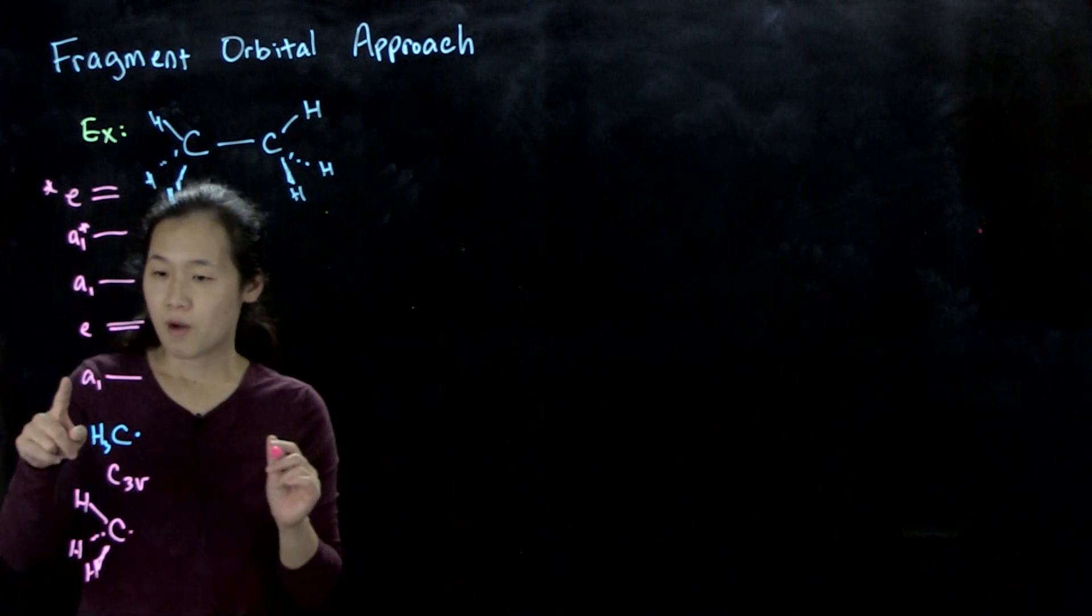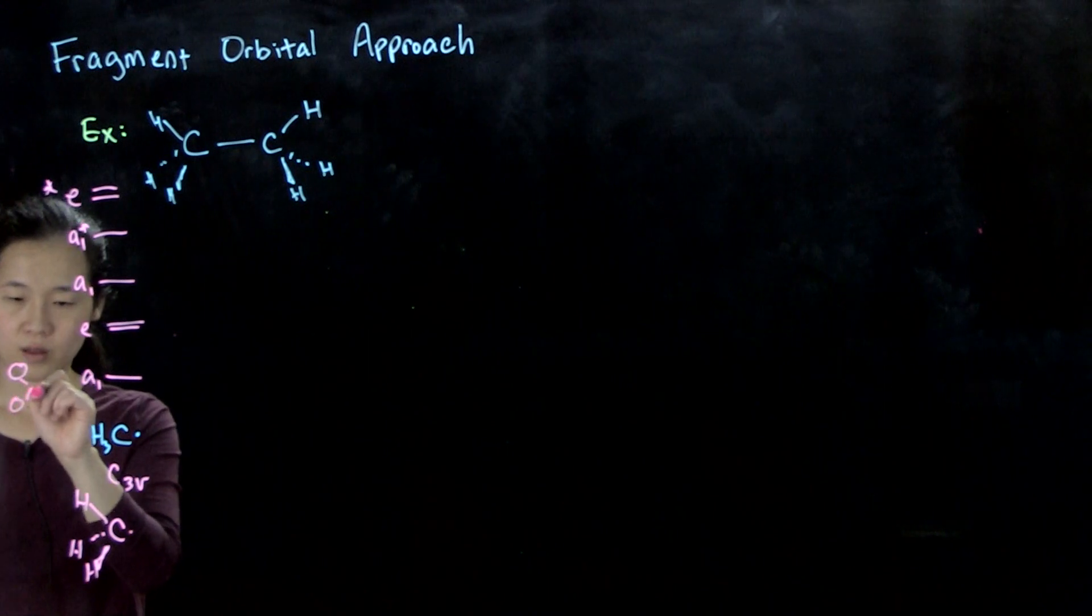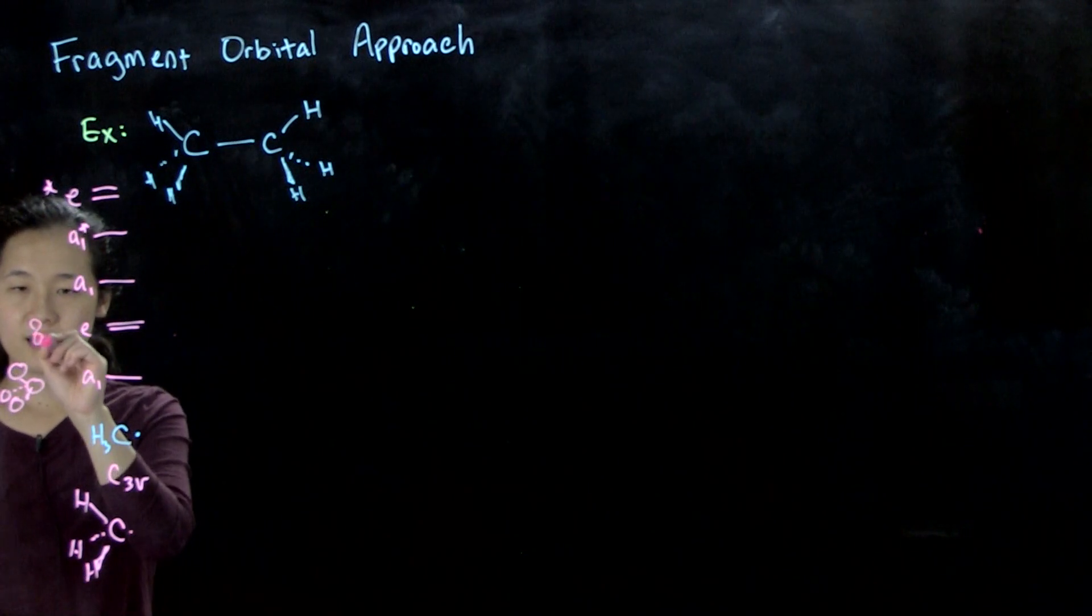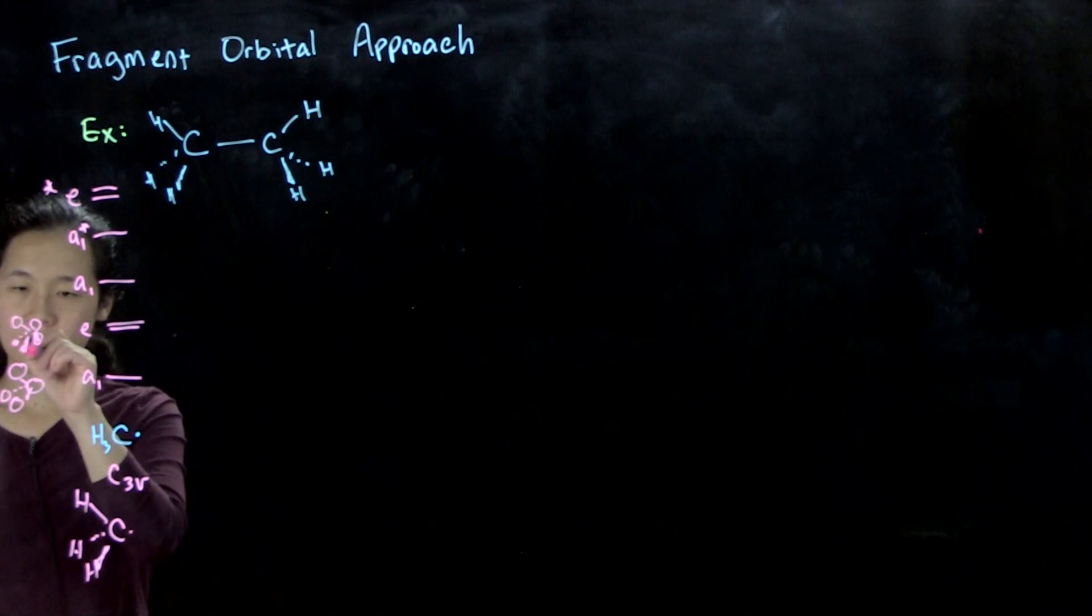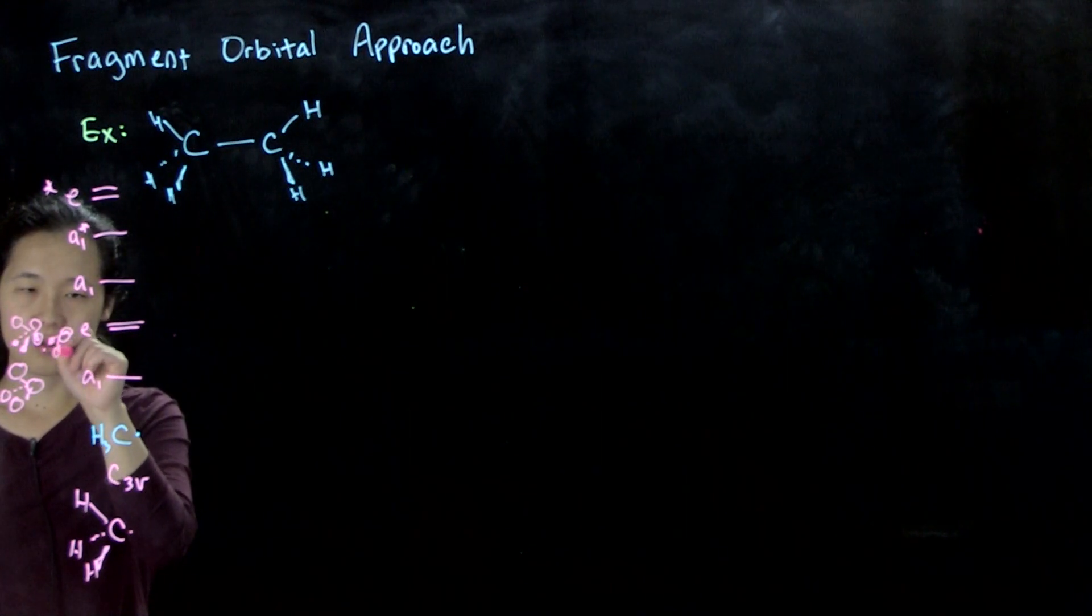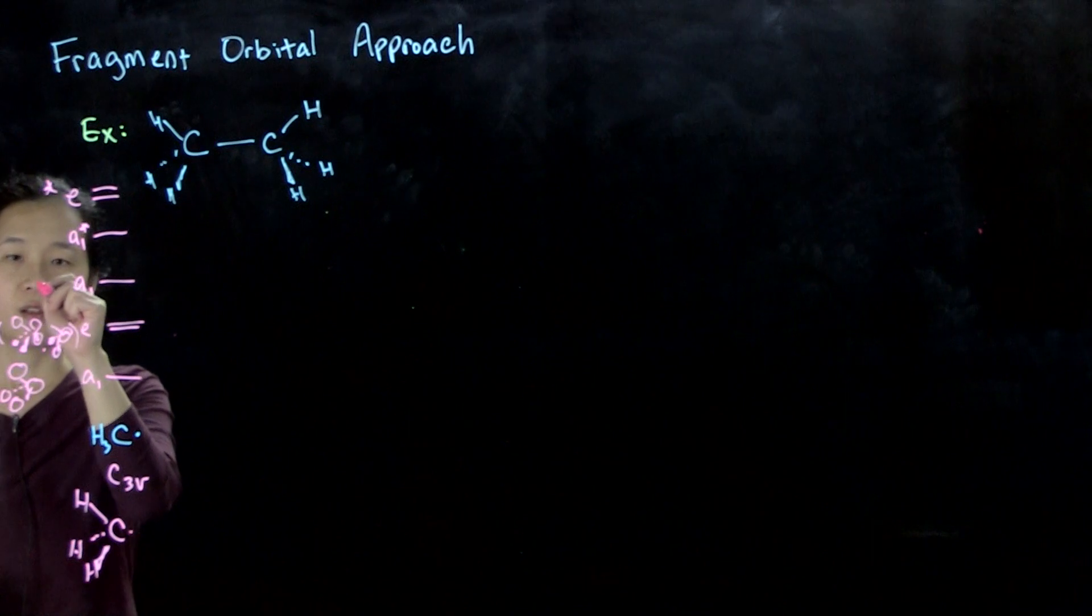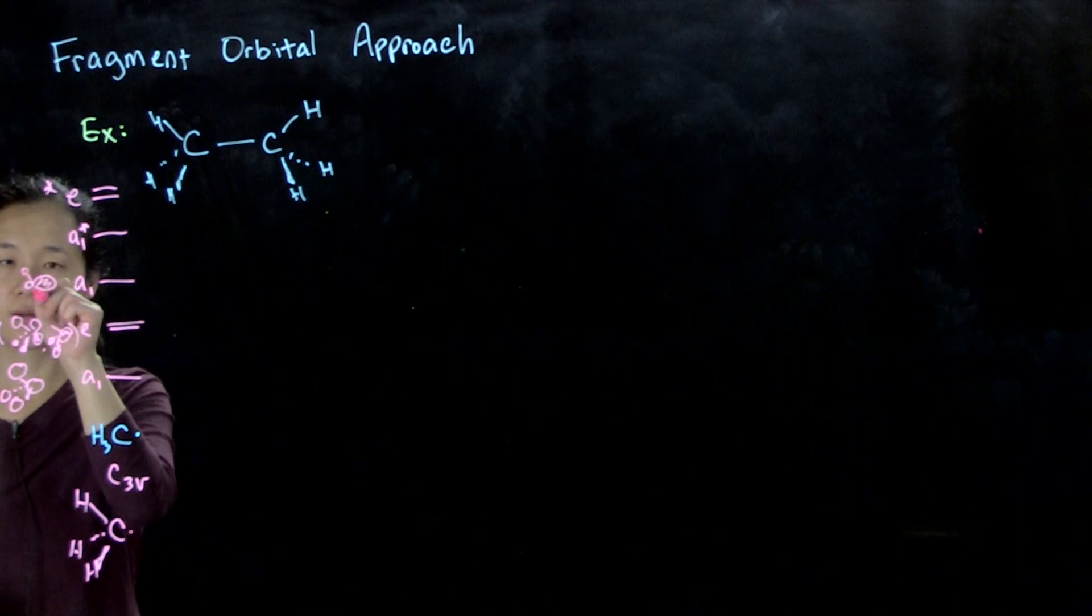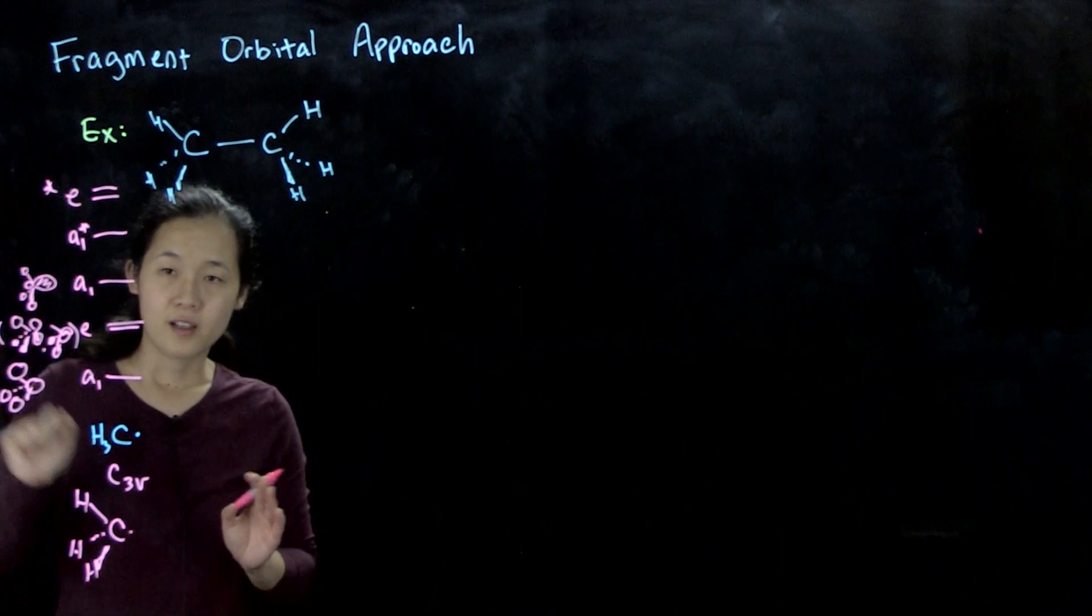Remember that this A1 was our all-in phase. This E was our bonding, like so, plus the other one. And then this A1 was that mixed orbital, which looks like this. And then these are the antibonding combinations, which I won't bother to draw.